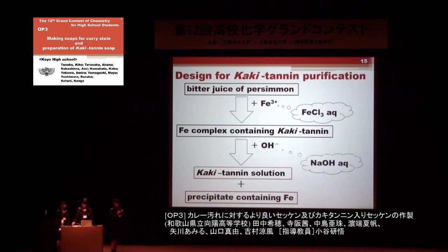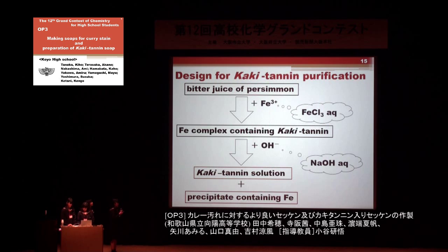This slide shows our design and verification scheme for kakitanin extraction. At first, the reaction of bitter persimmon juice with iron chloride gave an iron-kakitanin complex. Then, the iron complex reacts with sodium hydroxide to give a kakitanin solution and a precipitate containing iron. This alkaline solution is favorable for soap making.